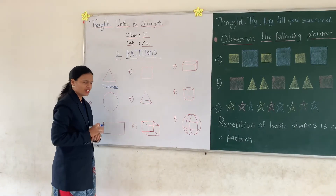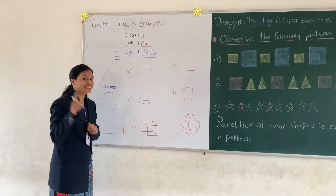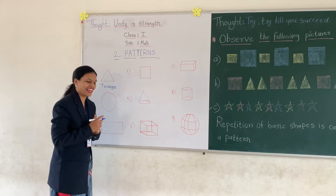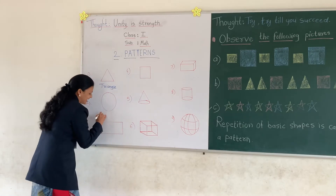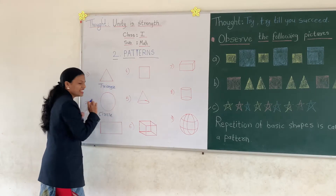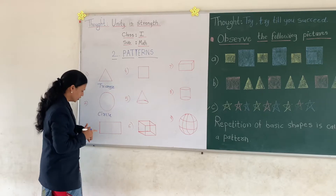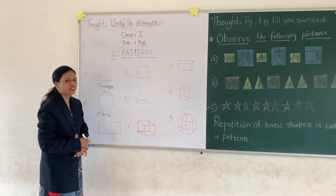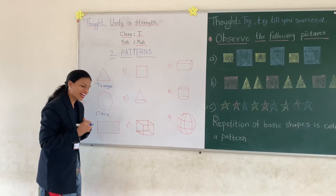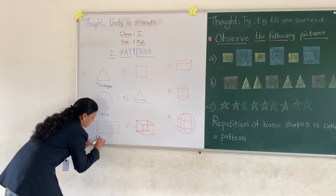Now second one — what shape is it, students? Circle. This is a circle. Very good. The third one is? Very good. Rectangle. What shape is this? Rectangle. Very good.